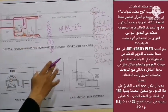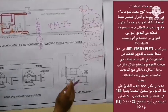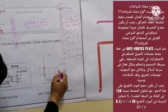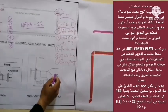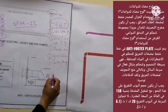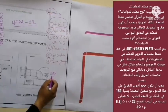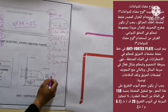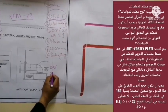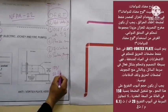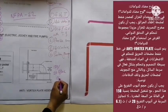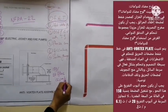Regarding the discharge pipe: the discharge pipe size shall be such that with the pump operating at 150 percent of rated capacity, the velocity in the discharge pipe does not exceed 20 feet per second, which is 6.1 meters per second.